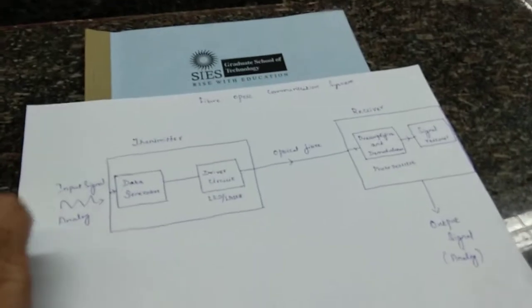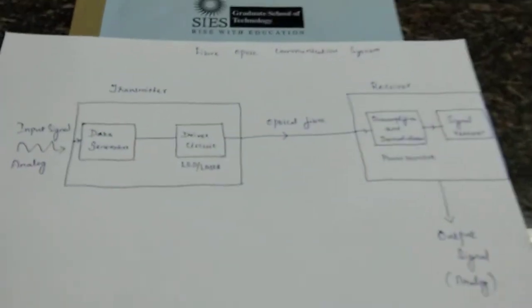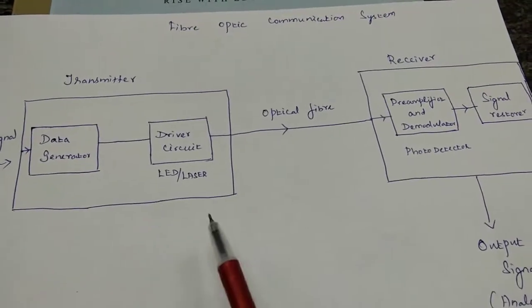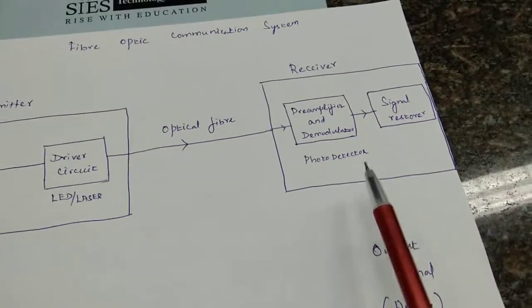So let us see how this fiber optic communication system kit works with a very simple block diagram. As I already told you, it consists of three main parts: a transmitter, an optical fiber, and a receiver.